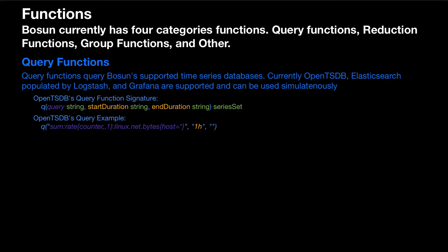Here's an example query where we have the sum aggregator. It's a rate, and we're querying the linux.net.bytes metric with host equals star, which is going to give us everything aggregated by host in sum. And we query from 1 hour ago till now, because when it's blank, that's regarded as now.